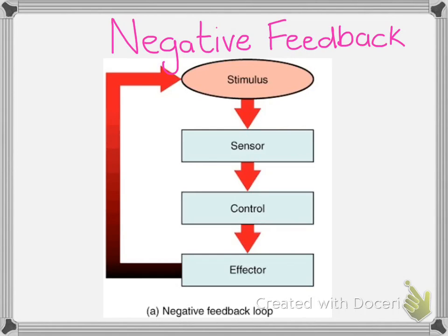Just to do a little bit of quick revision on what exactly negative feedback is: it's effectively a system that the body will use in order to maintain homeostasis. Remember, there is a norm for everything in terms of your body temperature, your testosterone levels, your fat levels. There is a norm for everything. And in order for negative feedback to work, you need to have three things at play at all times, and you always need to have some kind of sensor, whether that be a sensory cell or a receptor.